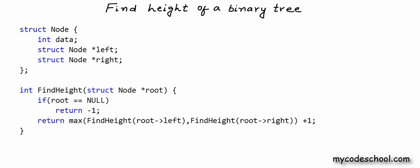This is what my find height function will look like in C or C++. Max here is a function that will return greater of two values passed to it as arguments. So this is it for this lesson. Thanks for watching.